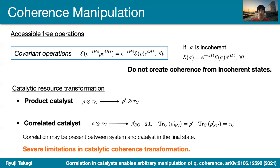Depending on the situation, one can consider various settings of catalytic transformations. The most straightforward is the product catalyst, where you start from a product state and end up with a product state. Recently, much attention has been paid to the correlated catalyst, where the final state is a composite state that may have correlation between the system and catalyst, but the marginal state of the catalytic system returns exactly to the same catalyst state. It is known that these catalysts are helpful in several resource theories, but unfortunately for coherence transformations there are several severe known limitations in catalytic coherence transformations.